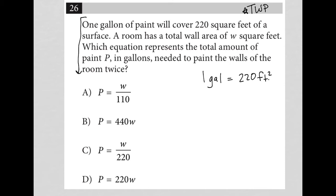Sentence two says a room has a total wall area of W square feet. So we have W feet squared.